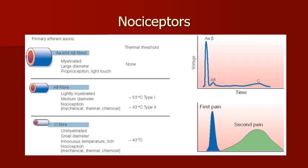Nociception is the sensory nervous system's process of encoding noxious or painful stimuli. Pain begins at nociceptors, which are cutaneous receptors specialized to detect noxious stimuli like extreme pressure, very hot or cold temperatures, or tissue damage. When activated, nociceptors send a signal to the spinal cord and then to the brain. Different nociceptors detect different types of pain. Peripheral nerves include medium to large diameter myelinated afferent fibers and small diameter unmyelinated afferent fibers. Conduction velocity is directly related to fiber diameter, as highlighted in the compound action potential recording from a peripheral nerve shown in the diagrams.